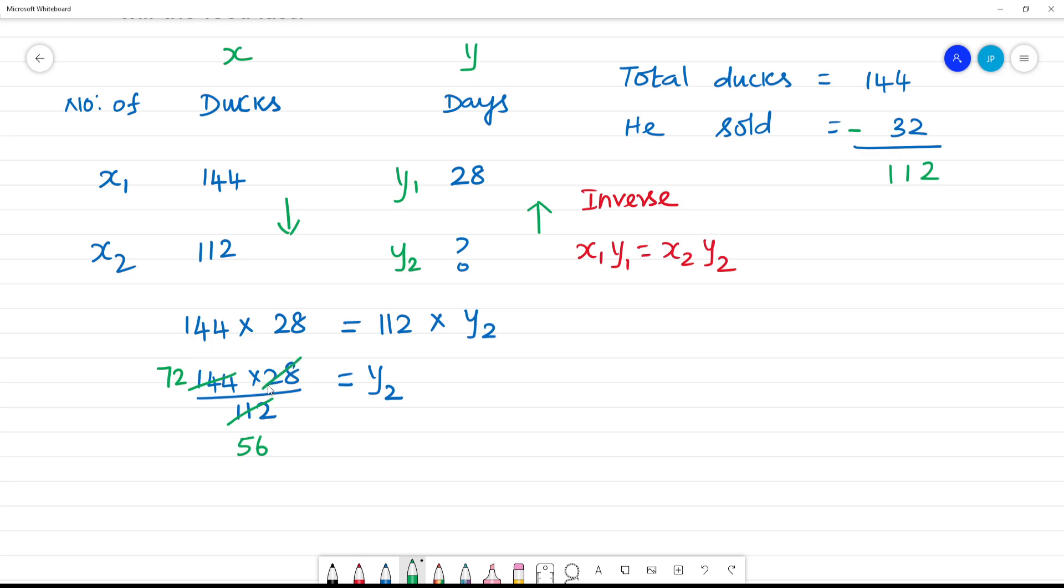Cancel by 2 again... 28 times 2 is 56. Cancel again, 2s are 2... cancel again, 2s are 6, remainder 1, 6, 2s are 12. Now y2 is equal to how much? 36.